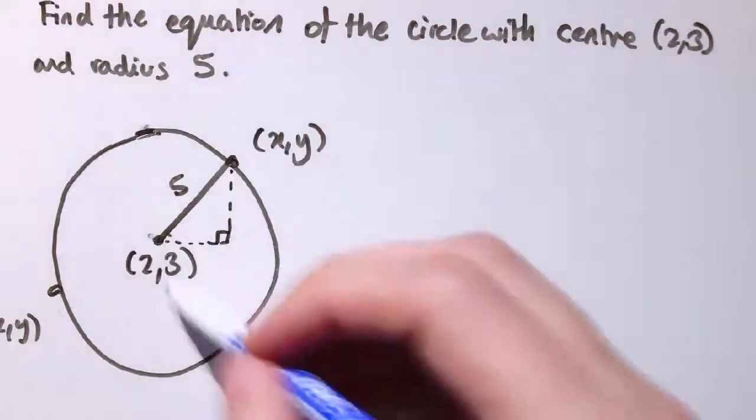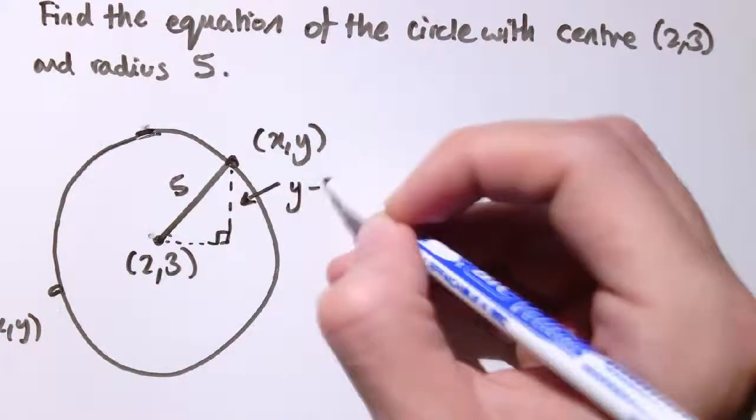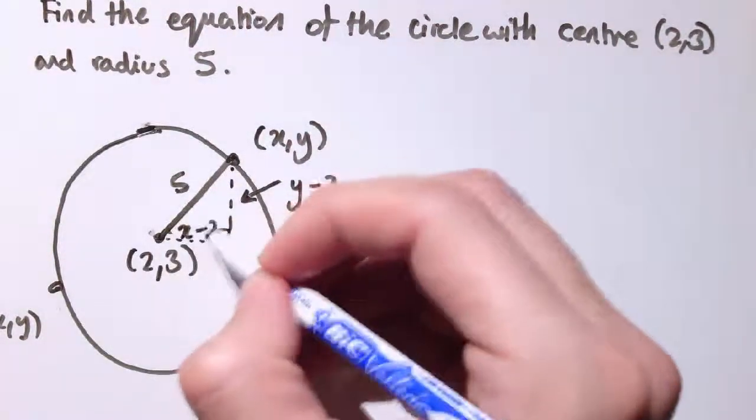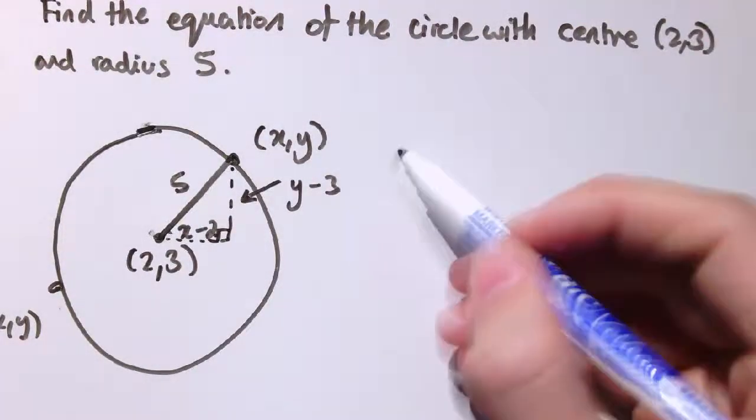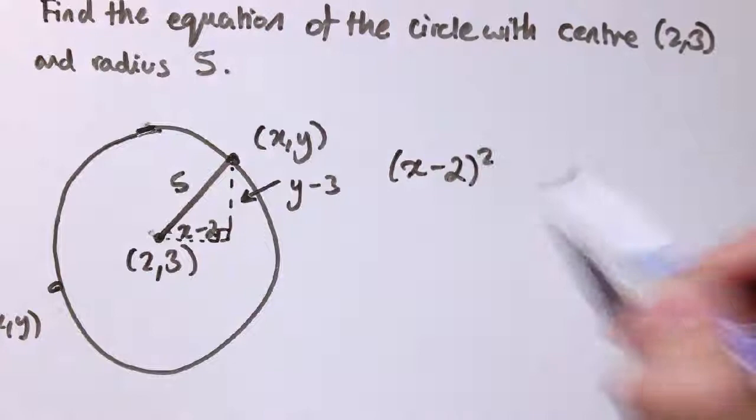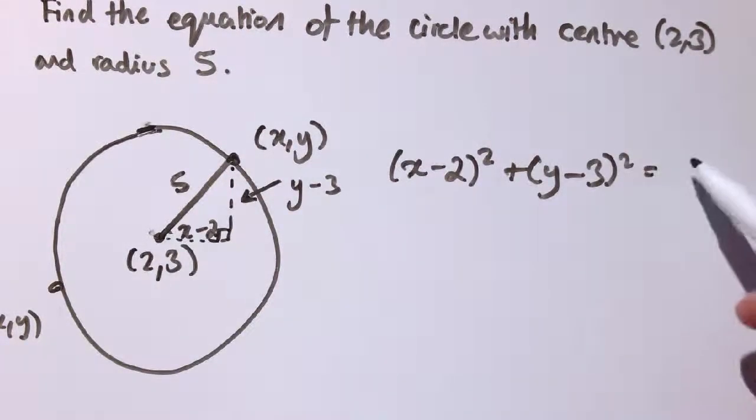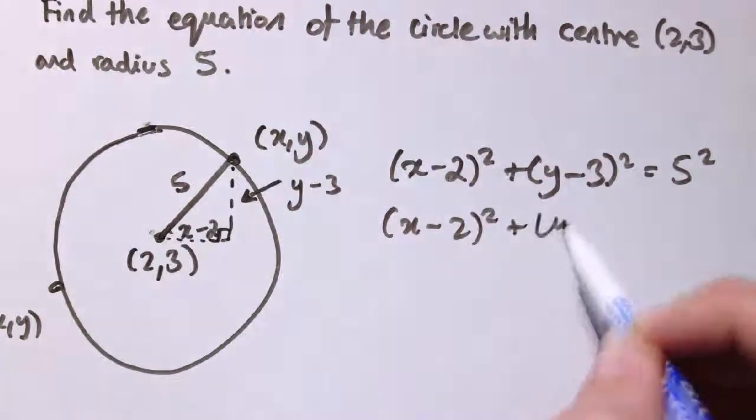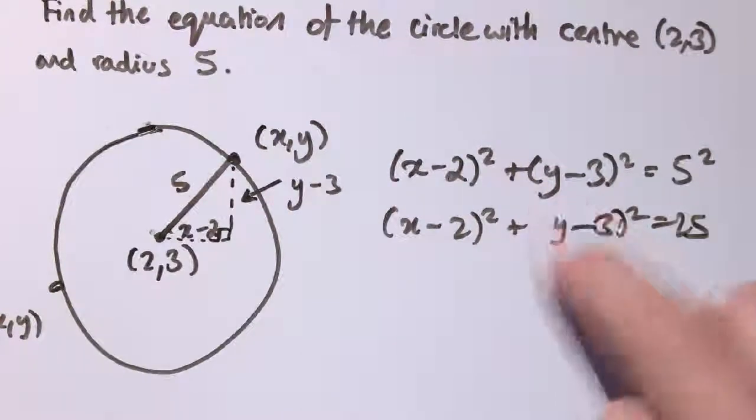I've got a right angle triangle here. This vertical distance would be y minus 3, change in the y coordinates, and the horizontal distance would be x minus 2, the change in the x coordinates. And Pythagoras theorem would say that x minus 2 squared plus y minus 3 squared is equal to 5 squared. Or we could write x minus 2 squared plus y minus 3 squared equals 25.